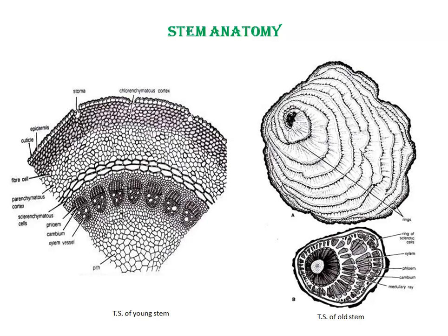Next is anatomy. We will start with the anatomy of the stem. This is the transverse section of a young stem and this is the transverse section of an old stem. The transverse section of the young stem shows epidermis, then cortex, then endodermis, and stele. Epidermis is the outermost layer, made up of compactly arranged rectangular cells with thin walls and possesses a heavy cuticle present outside the epidermis. The cells have papillate outgrowths. Sunken stomata are also present.